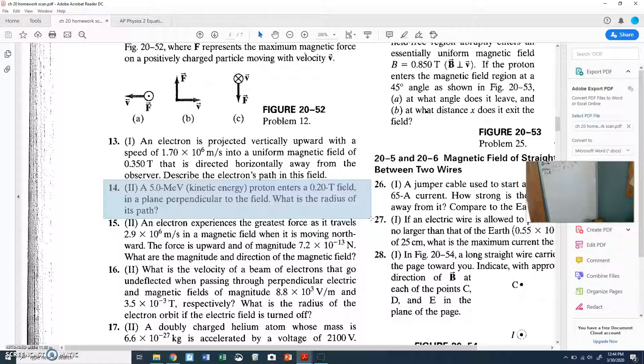First, I've got this 5 mega electron volts. What's a mega electron volt and how does that have anything to do with kinetic energy? They noted that it's a proton, that matters, and it enters a 0.2 tesla field in a plane perpendicular to the field. So what's its radius of its path?